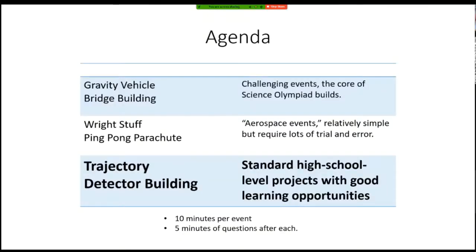The final two events are trajectory and detector building. These are standard high school level projects, but they have solid learning opportunities baked into them, and there are plenty of connections you can make between your courses in physics and computer science, maybe even statistics, to these two events. For those of you who want to supplement and enrich your academic knowledge and get a glimpse into some real-world engineering problems that you are mature enough to solve after taking these classes, these events are for you.